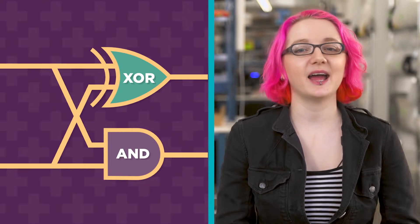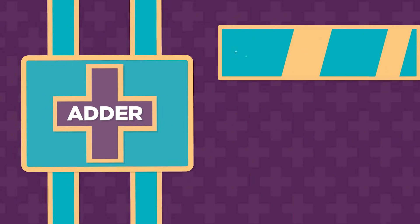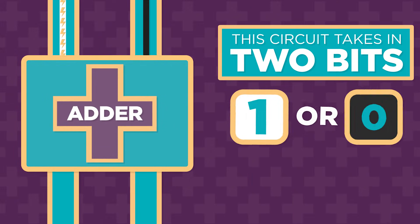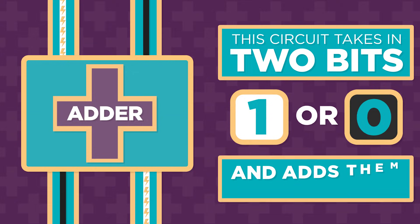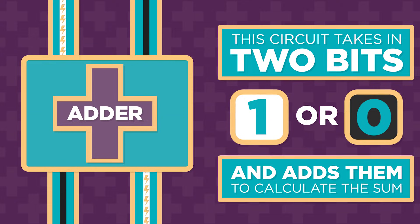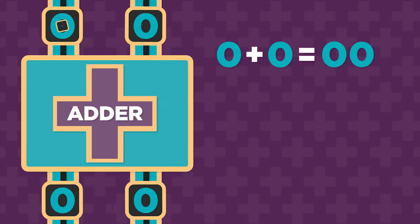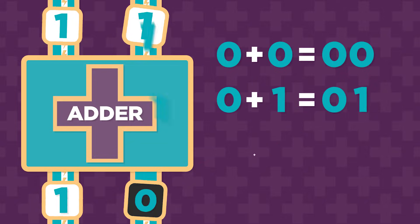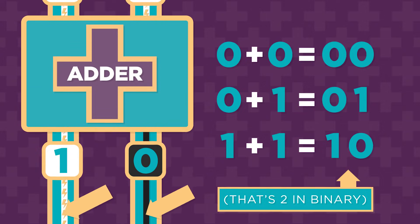For example, you can make a circuit that adds two bits together, called an adder. This circuit takes in two individual bits — each one a one or a zero — and adds them together to calculate the sum. The sum can be: zero plus zero equals zero, zero plus one equals one, or one plus one equals two.